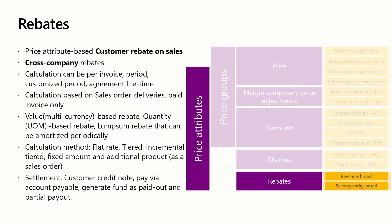The rebate management capability in Unified Pricing Management builds upon what was already available in Dynamics 365 Supply Chain Management by introducing rebates based on price attribute. It overcomes the constraints imposed by the ability to only select items, groups, or all items in earlier versions of rebate management. Existing capabilities include price attribute based customer rebate on sales, cross company rebates, calculation per invoice period and agreement lifetime, calculation based on sales order, deliveries and paid invoice, and different types of rebates such as value based, quantity based, and lump sum rebates, as well as varying calculation and settlement methods.